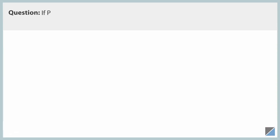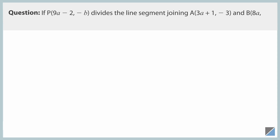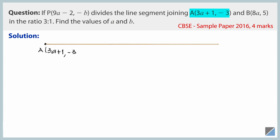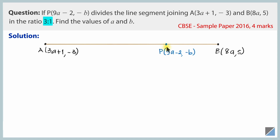The question is: if P(9a − 2, −b) divides the line segment joining A(3a + 1, −3) and B(8a, 5) in the ratio 3 is to 1, find the values of a and b. To solve this problem, let's first draw three points A, B, and P. Point A has coordinates (3a + 1, −3), point B has coordinates (8a, 5), and point P has coordinates (9a − 2, −b). The ratio is given as 3 is to 1, meaning point P divides segment AB in the ratio 3 is to 1. We have to find the values of a and b.